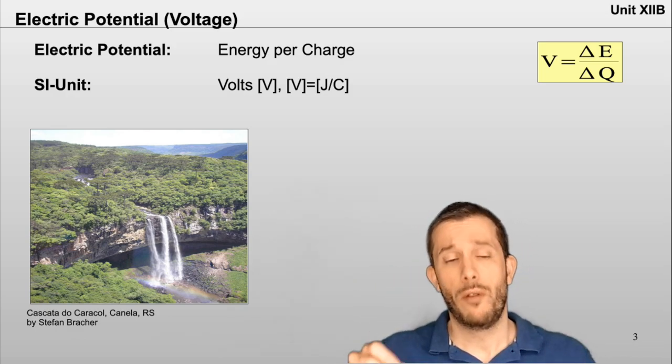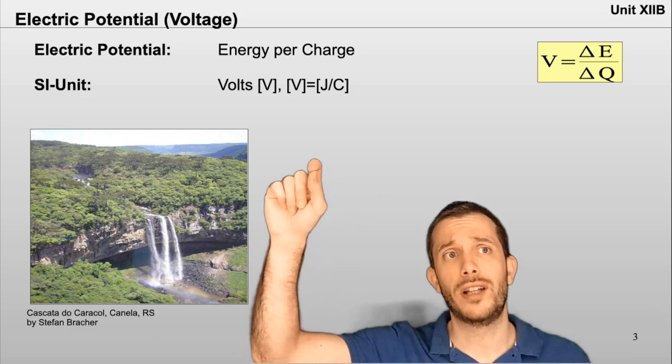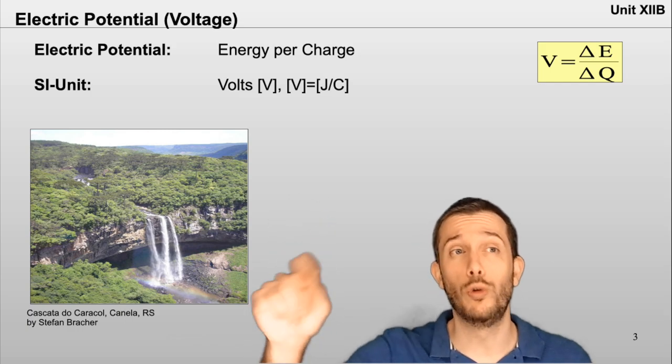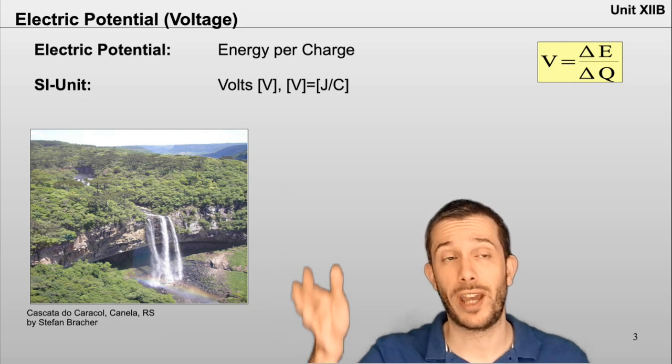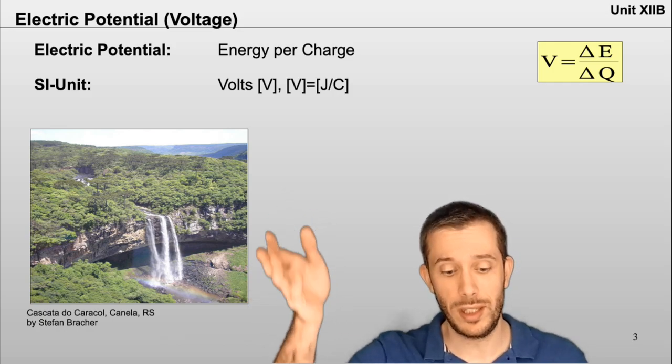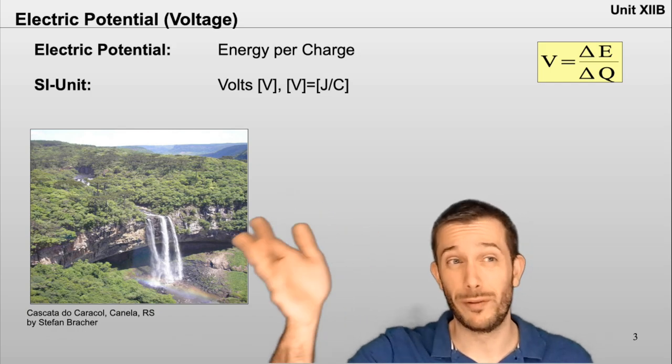So we would have the electric potential energy divided by the coulombs. So per coulomb, how many joules of potential electric energy do we have? So this is what the electric potential or the voltage is.